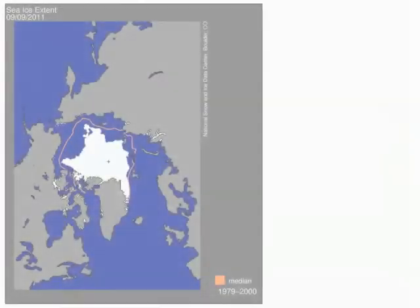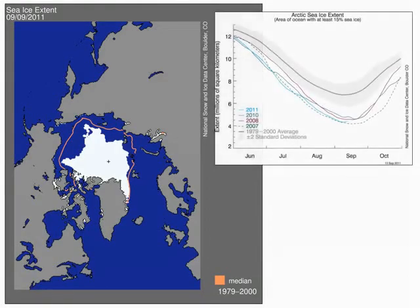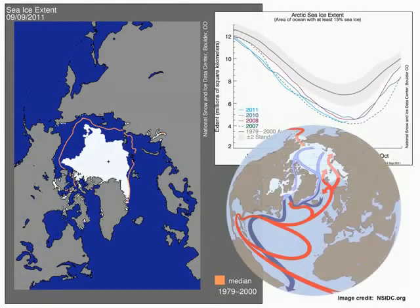Recent decreases in sea ice suggest internal wave generation and mixing will increase in the Arctic, affecting both seasonal ice formation and large-scale circulation.